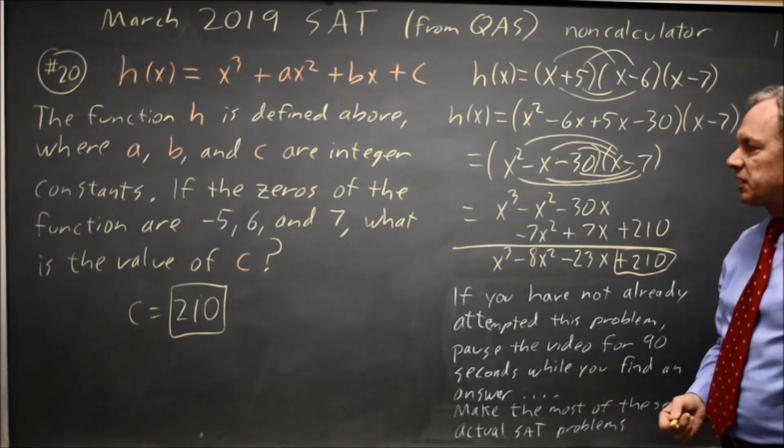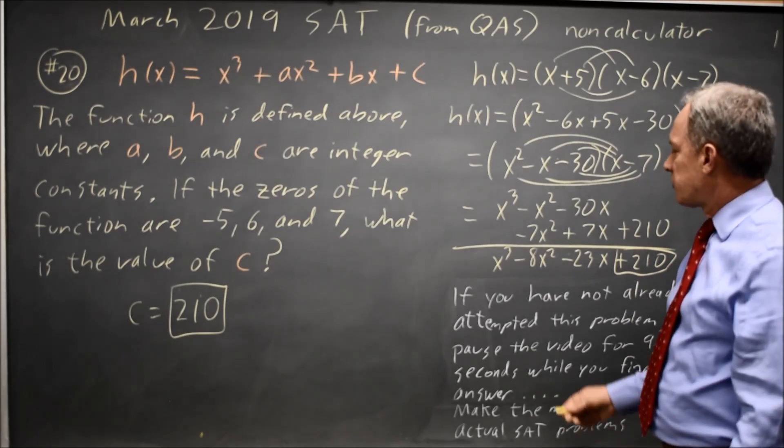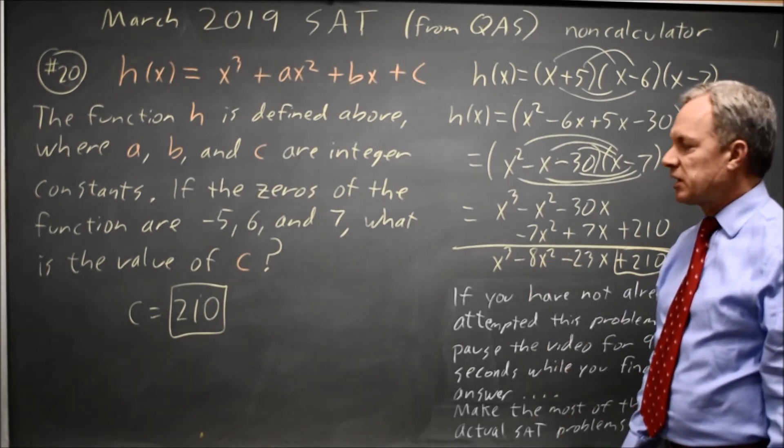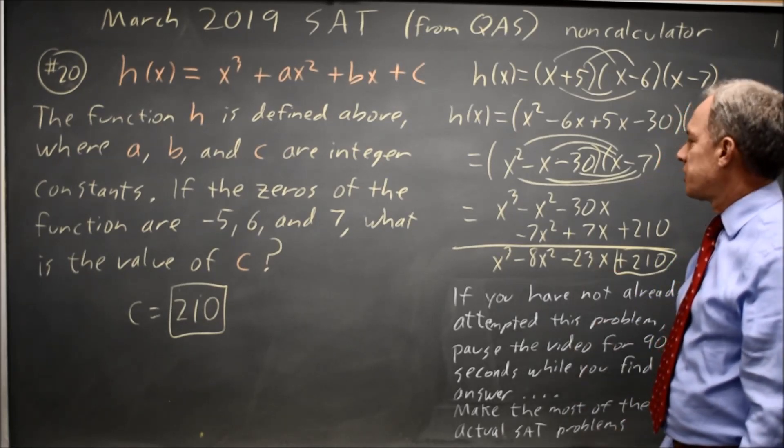I know I can't grid in a negative, so it has to be the positive 210 that I found. If I ended up with a negative, I would be suspicious that I just flipped a sign. If I was under time pressure, I would grid in the positive. If I had time, I'd check for my error.